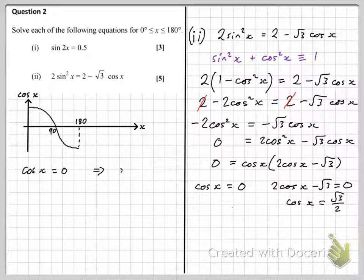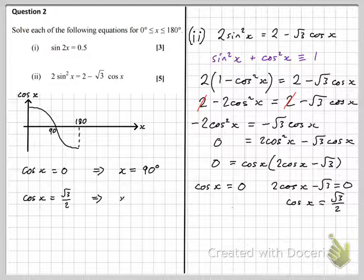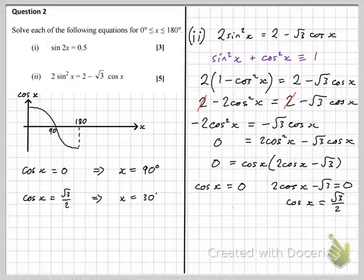So cos x equals 0, inverse cos of 0 gives us 90 degrees. We can see that from the diagram. And if we inverse cos root 3 over 2, we get that x is 30 degrees. And that's it. We can't do 360 minus that to get another value, because that would just take us straight out of the range. So we are done.